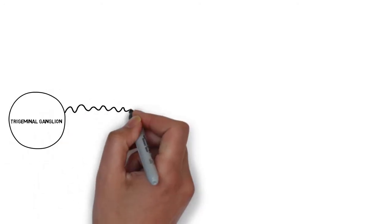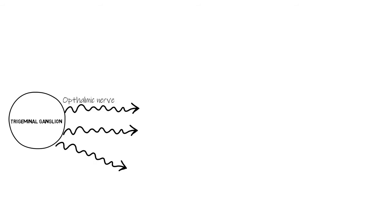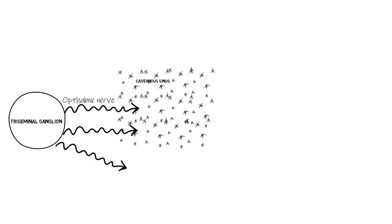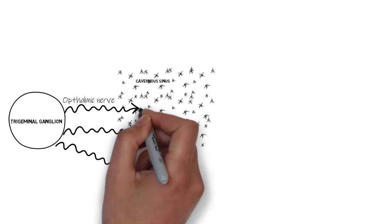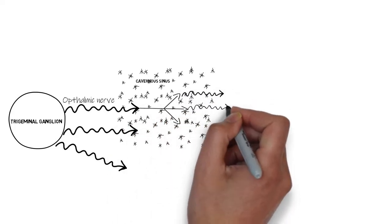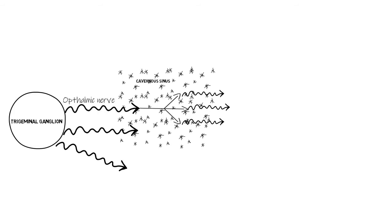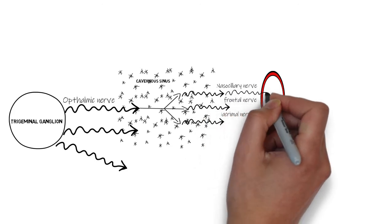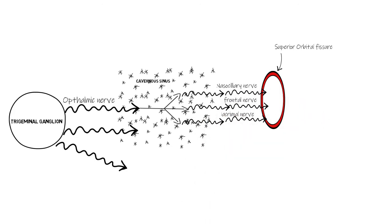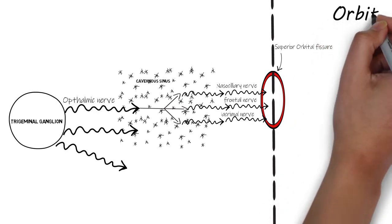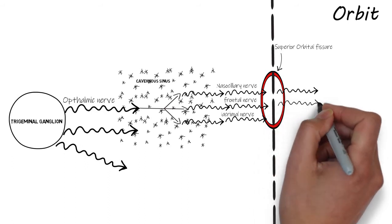Soon after emerging from the trigeminal ganglion, the ophthalmic nerve, along with the maxillary nerve, travels to the cavernous sinus. While still inside the cavernous sinus, just before escaping the cranium, the ophthalmic nerve subdivides into three branches: the nasociliary branch, the lacrimal branch, and the frontal branch. All three branches then almost immediately escape the cranium through the superior orbital fissure and enter the orbit.